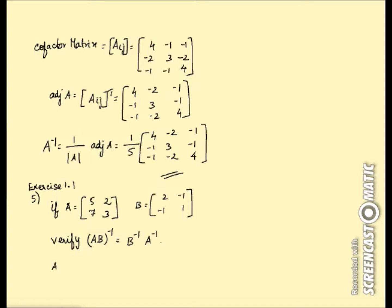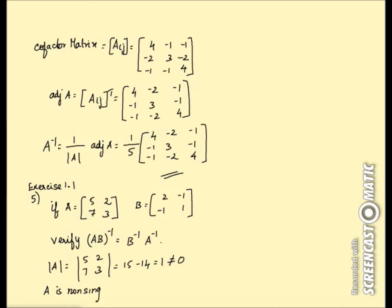The determinant of A is equal to (5×3) − (2×7) = 15 − 14 = 1, which is non-zero. So A is non-singular, and therefore A inverse exists.